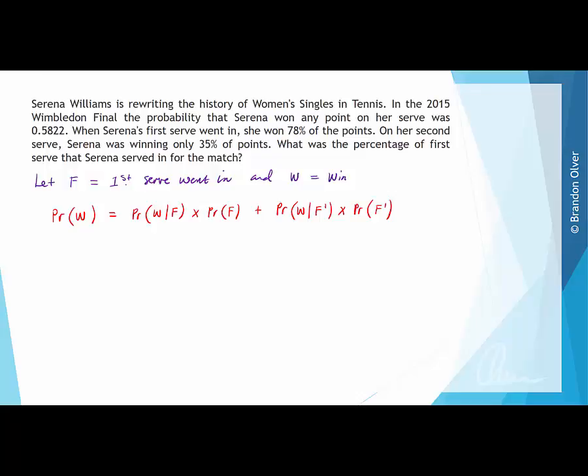Next we can substitute into this equation all the information we know. So we know the total probability of her winning any point was 0.5822. So that's the probability of her winning there, so we replace that with 0.5822. And that is going to equal the right-hand side of our equation still. So the next thing we know is that she won 78% of the points when she got her first serve in. So that there is the probability of her winning, given her first serve went in, so we can replace that with 0.78.